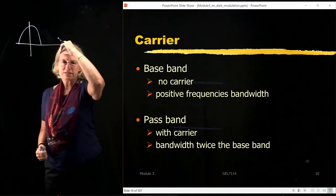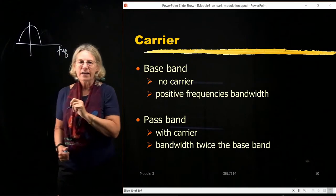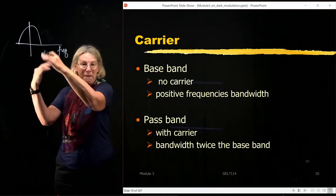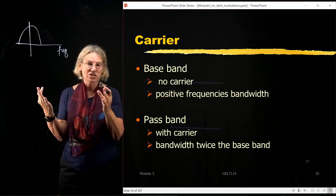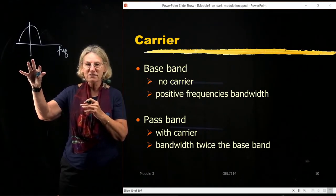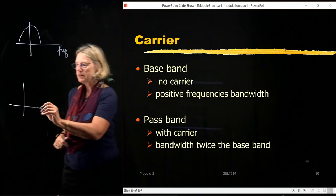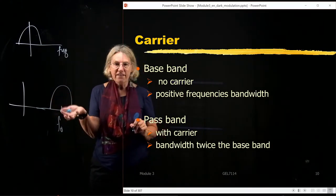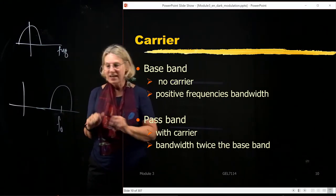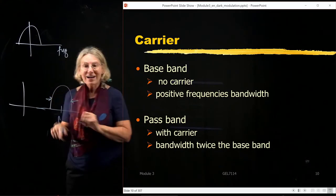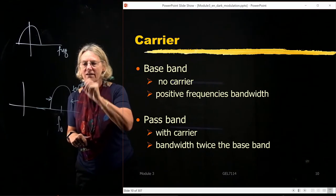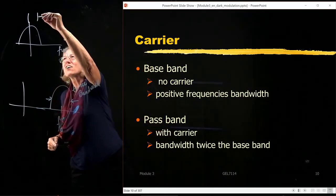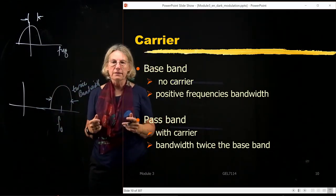In baseband, the spectrum is centered at DC. These are positive frequencies and these are negative frequencies. We know that negative frequencies don't really exist, but this is a mathematical construct which well describes manipulations in the frequency domain. In baseband there is no carrier, and the real bandwidth is only the positive portion — the rest is just the mathematical construct that is easy to manipulate with the Fourier transform.